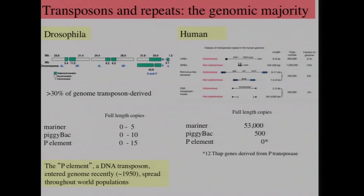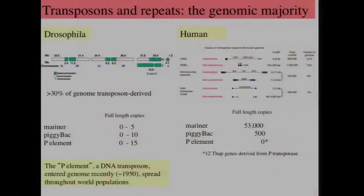Even individual elements can be recognized between these two genomes — for example, the Mariner class, piggyBac, and P element are among the DNA transposons. In Drosophila, some strains have zero but many have several of these elements, and they move around the genome. In humans, there are 53,000 full-length copies of the Mariner element, but they all contain point mutations; similarly, 500 copies of piggyBac. These elements currently don't appear to be active. There are no full-length P element copies in the human genome, but there are 12 genes related to the P transposase whose function is still very poorly understood.